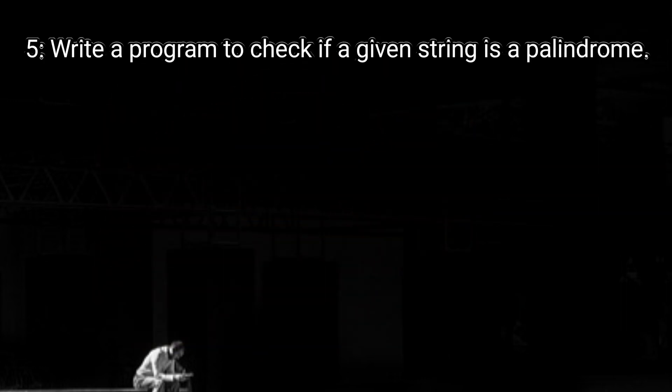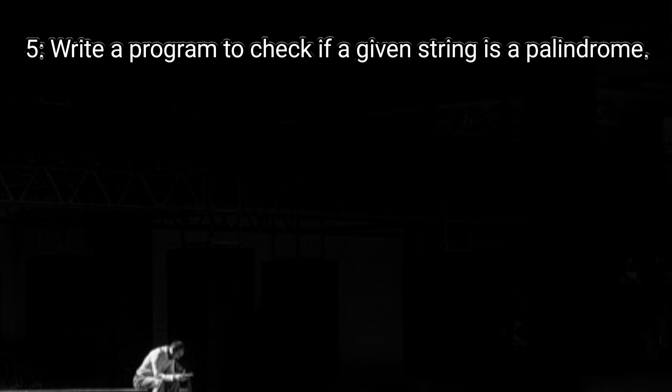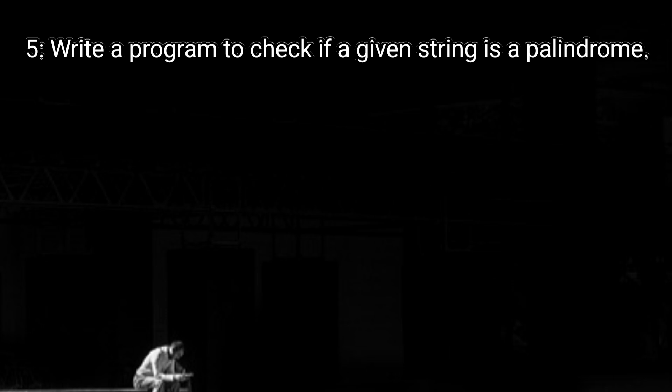Question number five: write a program to check if a given string is a palindrome. See the code on the screen. Declare a variable to store the input string, initialize two pointers — one at the start and one at the end of the string. Compare the characters at the two pointers. If the characters match, move the pointers toward the center of the string. If the characters do not match, the string is not a palindrome.